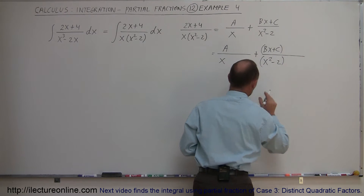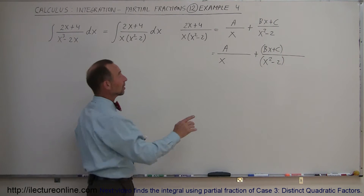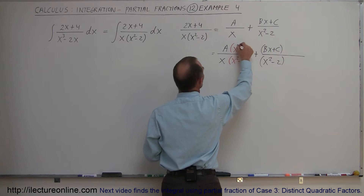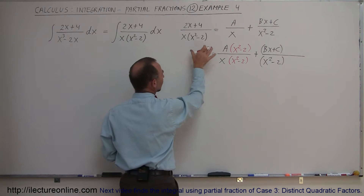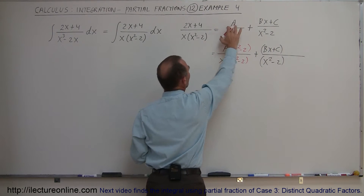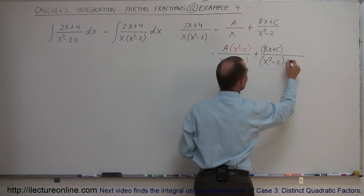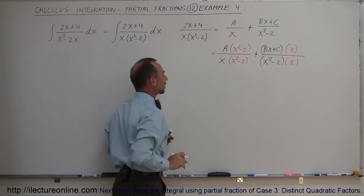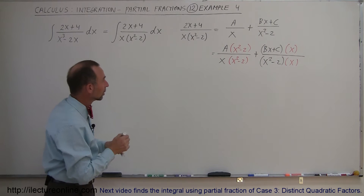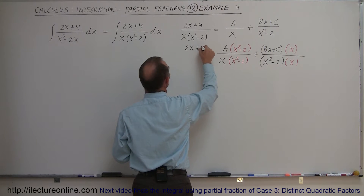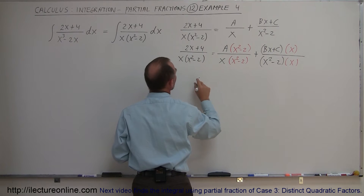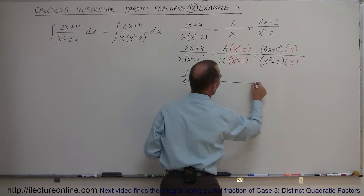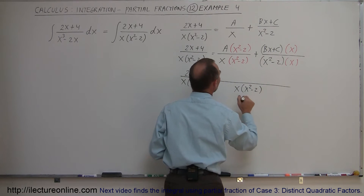We can now see what's missing in each denominator. For the first fraction, we have an x but not x squared minus 2, so we multiply by x squared minus 2 in both numerator and denominator. For the second fraction, we're missing an x, so we multiply numerator and denominator by x. Now both denominators match, and we can write everything over the common denominator x times x squared minus 2.